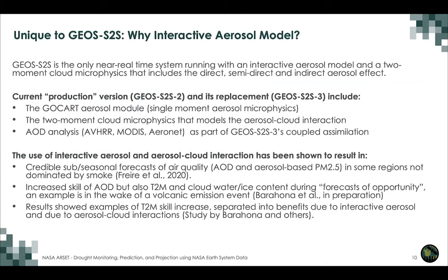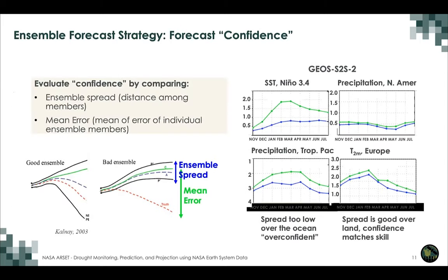An example: dust coming off Africa impacts the development of tropical cyclones in the Atlantic that season, and we are properly able to capture that. We use an aerosol model called GOCART. This results in credible forecasts of air quality, aerosol optical depth, and aerosol-based particulate matter 2.5 microns. In some regions dominated by smoke we're out of luck, but elsewhere we're good. We've also seen an increase in skill of 2-meter temperature and cloud water ice at moments when these effects are important.